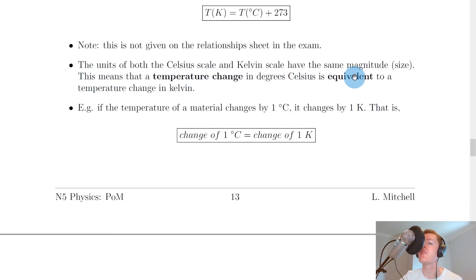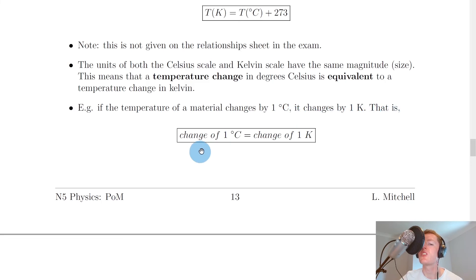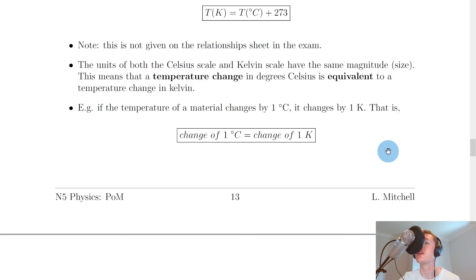The units of both the Celsius and Kelvin scales have the same magnitude — the same size. This means a temperature change in degrees Celsius is equivalent to a temperature change in Kelvin. For example, if a material's temperature changes by one degree Celsius, it changes by one Kelvin. A classic National Five Physics multiple choice question might say a material has undergone a temperature change of 10 degrees Celsius and ask for the equivalent change in Kelvin — the answer is 10 Kelvin, because one degree Celsius is the same size as one Kelvin.